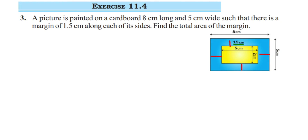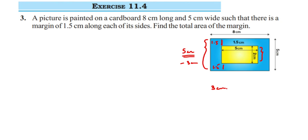Now what will be the dimensions of that picture? We have only been given the measurements of the cardboard, not the picture. Since the whole width is 5 centimeter and the picture is placed leaving a 1.5 centimeter margin, from the top and from the bottom we remove 1.5 centimeter. So 1.5 plus 1.5 is 3 centimeter. From 5 centimeter, removing 3 centimeter gives us the width of the picture.